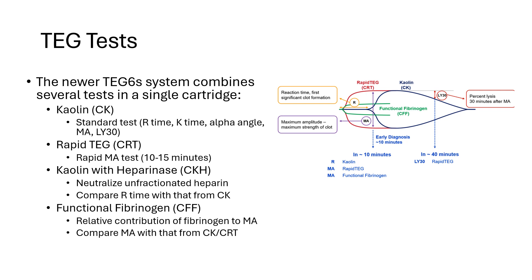The next test is the Rapid TEG, or CRT. This utilizes tissue factor and kaolin as activators. It does not provide information on coagulation kinetics — the R time is lost. However, information on clot strength (max amplitude) is rapidly acquired, usually within 10 to 15 minutes of initiating the test.